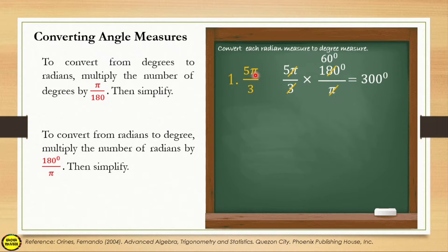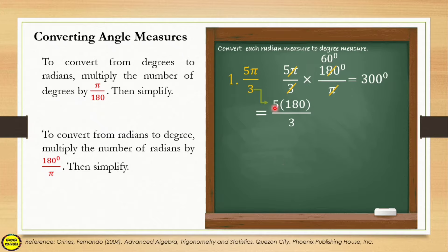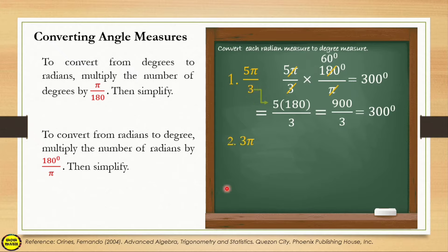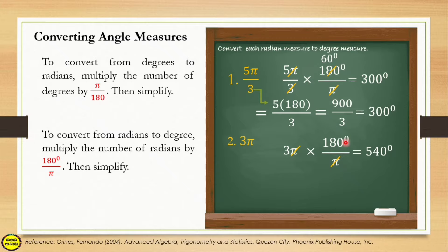There is also an alternative solution: since π is equivalent to 180, you can simply substitute π = 180 and multiply. For 5π/3: 5 times 180 divided by 3 gives 900 ÷ 3 = 300 degrees. For number 2, we have 3π. Multiply 3π by 180/π — π cancels, leaving 3 times 180 degrees = 540 degrees. Next, we have negative 7π/6. Multiply by 180/π; π cancels, and 180 ÷ 6 = 30 degrees, leaving negative 7 times 30 degrees = negative 210 degrees.